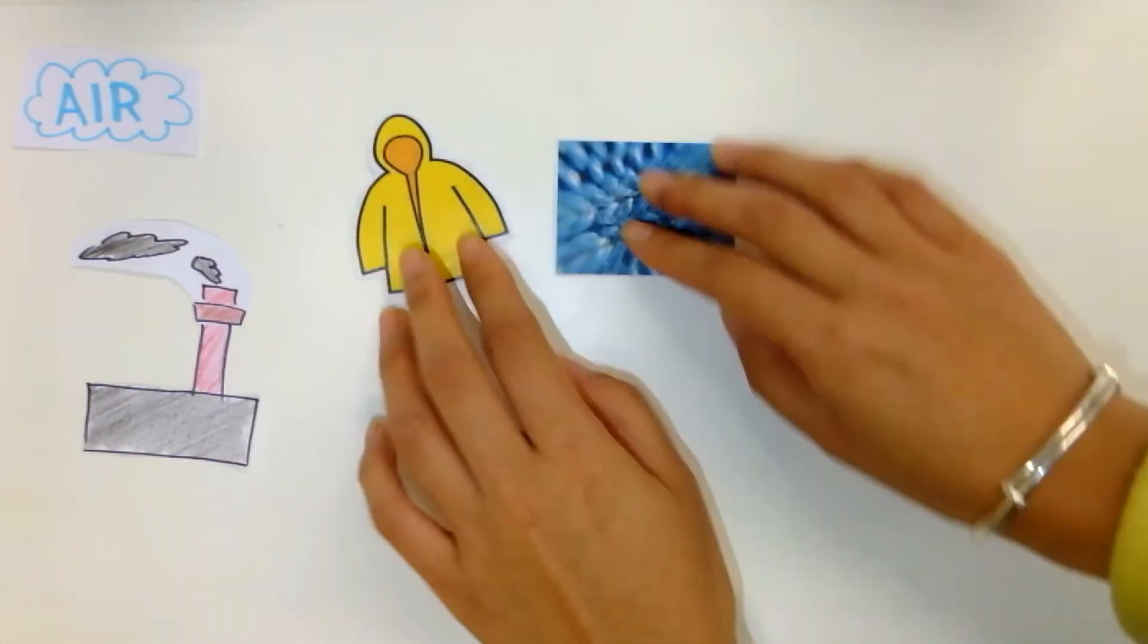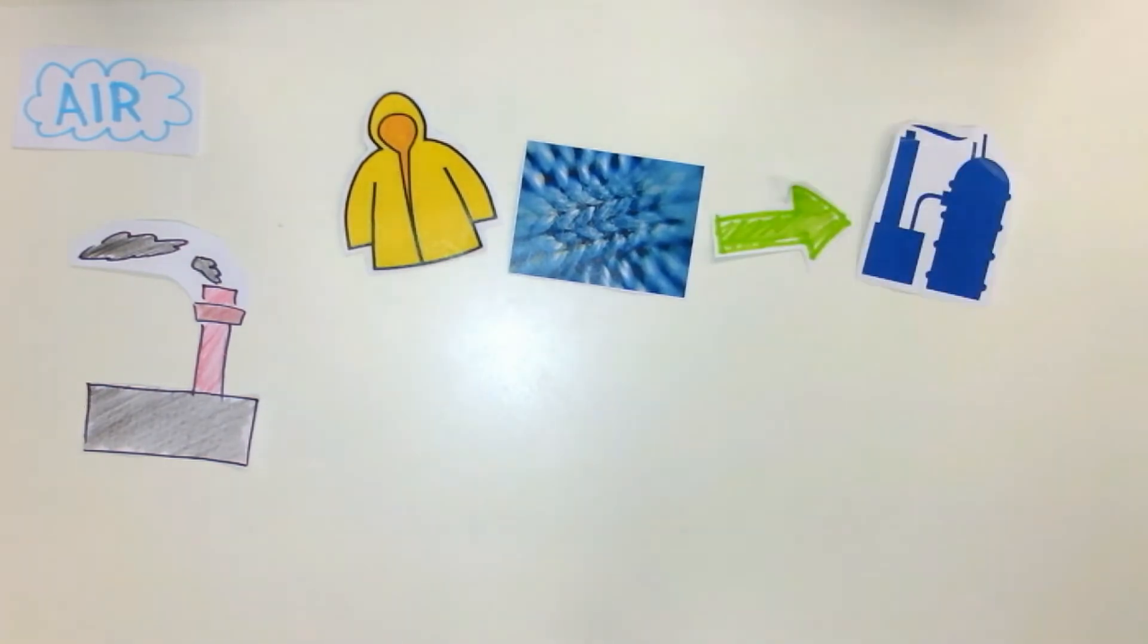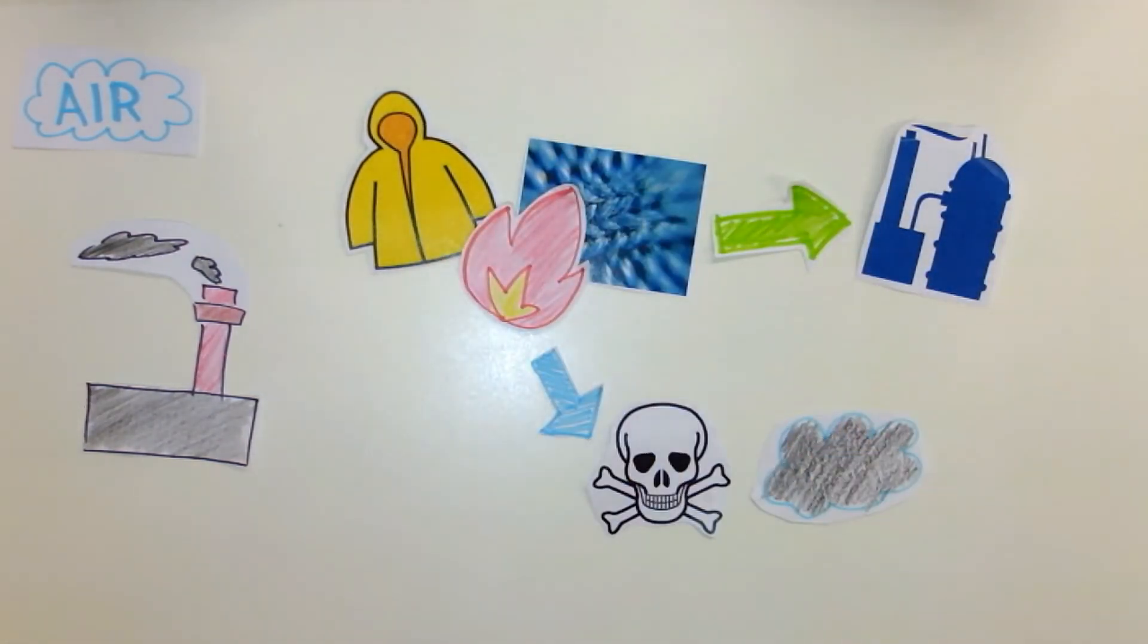For air, textile waste can be treated by incinerator and induce air pollution. Since the fiber of clothing is made by petrochemicals, some toxic gases will release when burning. There are a few examples.